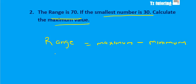We know the formula for calculating the range is the biggest or the maximum minus the smallest or the minimum. So let's substitute into this formula. The range is given as 70. The maximum is what we're trying to determine. And the minimum, they tell us the smallest number is 30, so the minimum is 30.